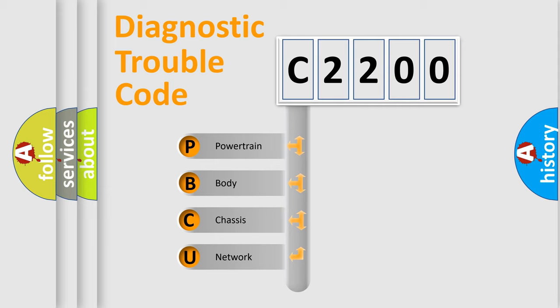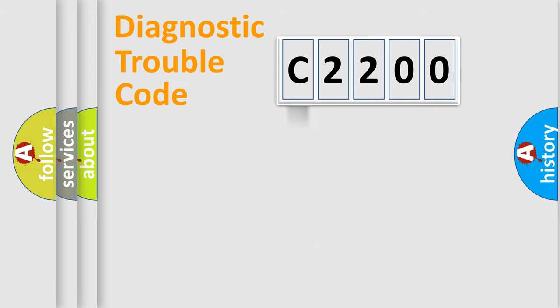We divide the electric system of automobile into four basic units: powertrain, body, chassis, and network. This distribution is defined in the first character code.